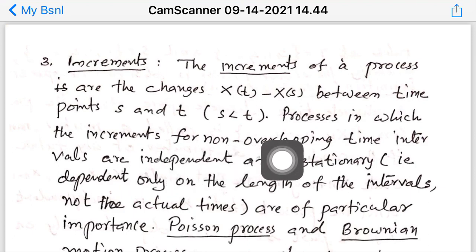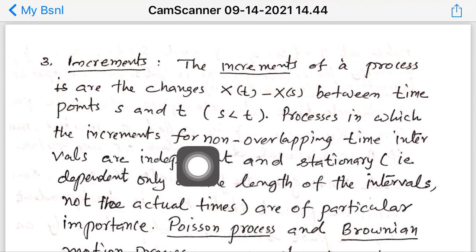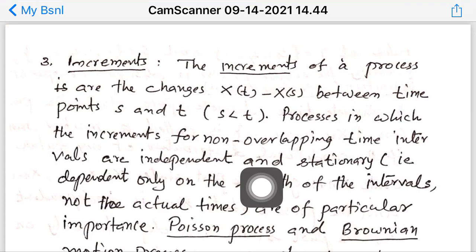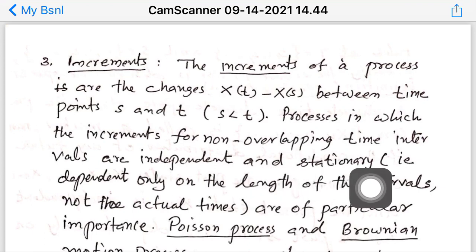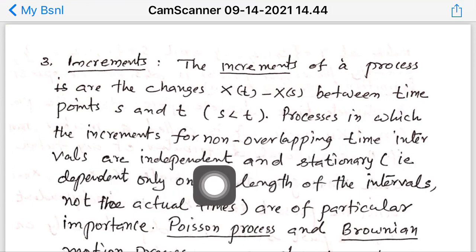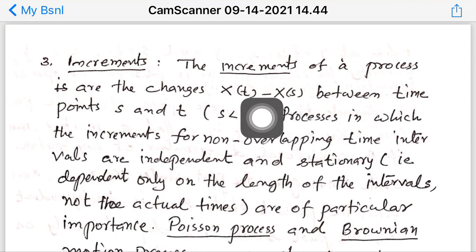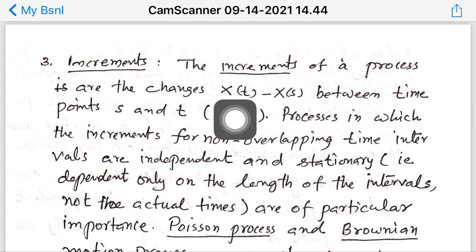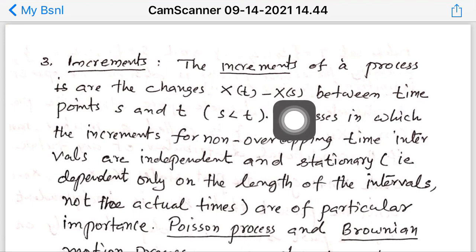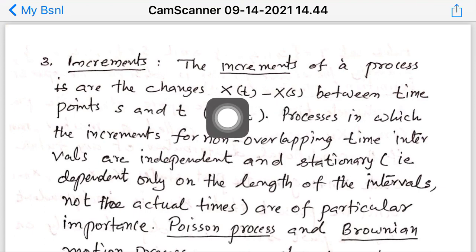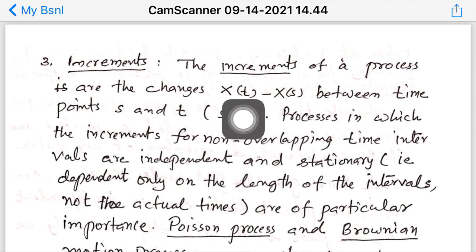Some stochastic processes have the property that increments from non-overlapping time intervals are independent. That means the random variables X(t1) minus X(s1), X(t2) minus X(s2), X(t3) minus X(s3), etc. are independent for non-overlapping intervals. Since X(t) and X(s) are random variables, their difference is also a random variable. When such increments are independent, we say the process has independent increments.